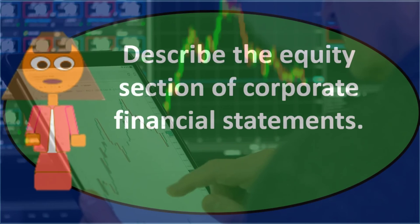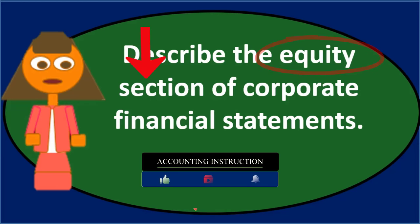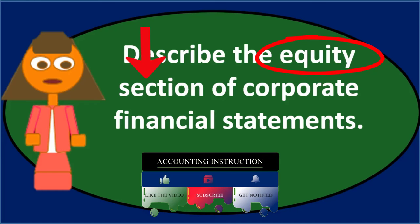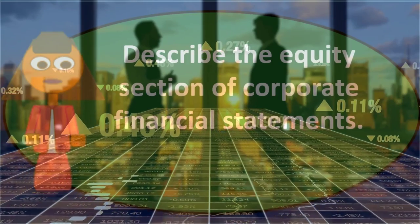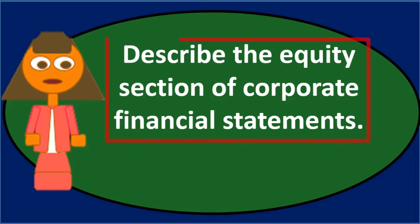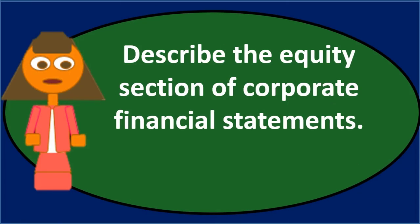Another component is treasury stock. This occurs when a corporation purchases back its own stock — for example, if a large company like Apple buys back shares trading on the stock market. We would credit cash and debit treasury stock. The confusing aspect is that treasury stock sits in the equity section but carries a debit balance, and since equity normally has a credit balance, treasury stock actually decreases total equity. In summary, the major equity components are common stock and additional paid-in capital representing investment, and retained earnings representing accumulated net income less dividends.